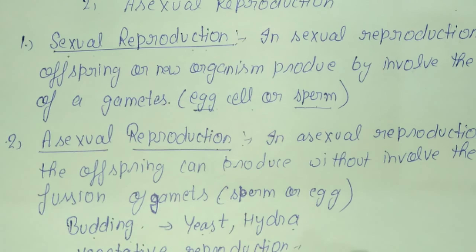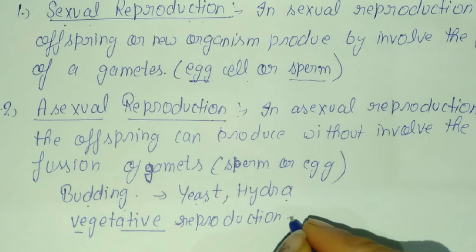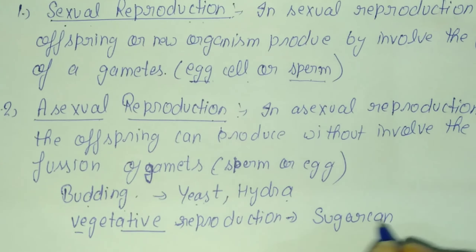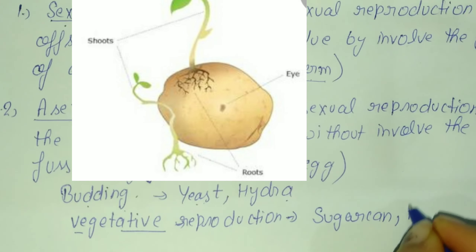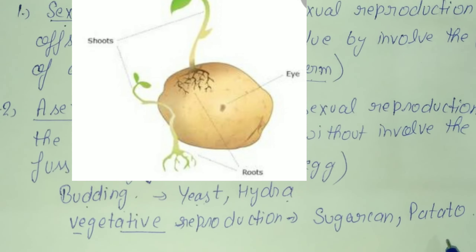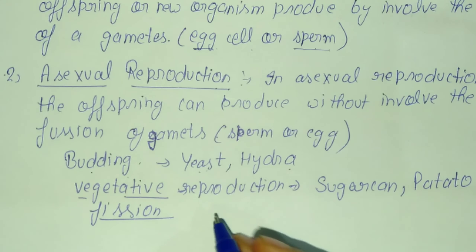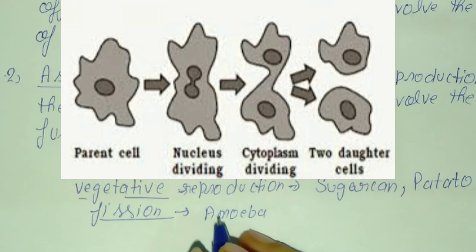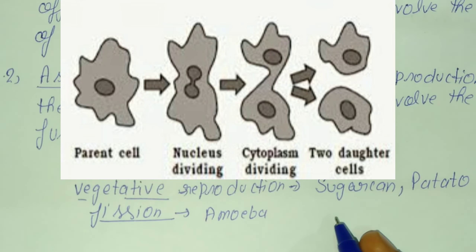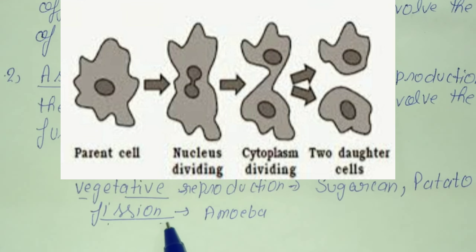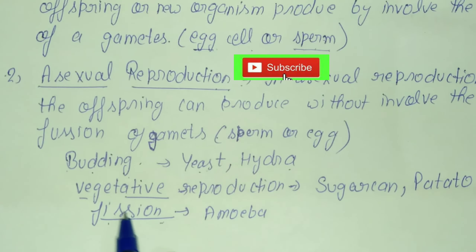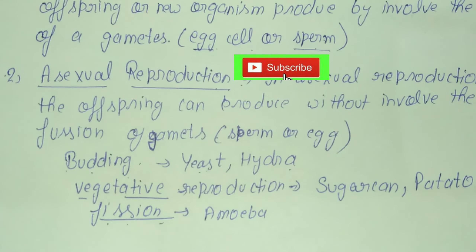Next is vegetative reproduction, where a stem or root produces new offspring. Examples include sugar cane stem and potato stem. In fission, one cell is divided into two cells. An example is amoeba, which is a unicellular organism. New offspring are produced by fission. These are examples of asexual reproduction. Thank you very much.